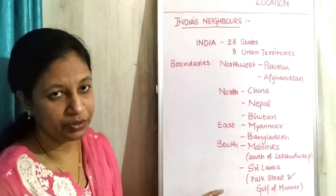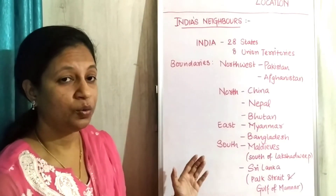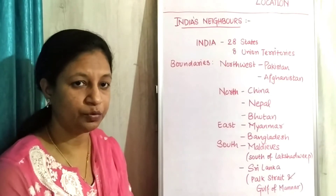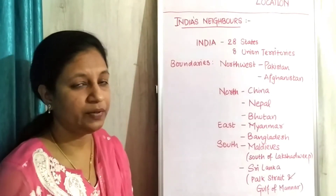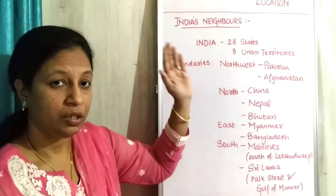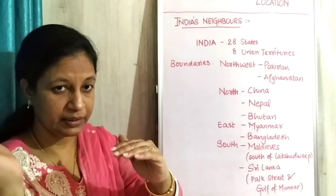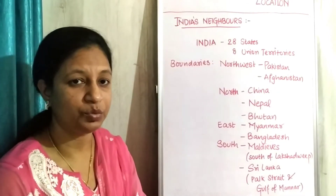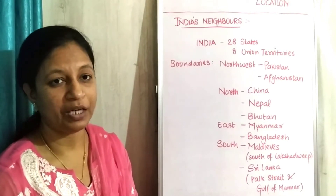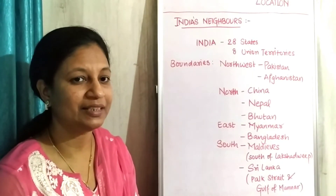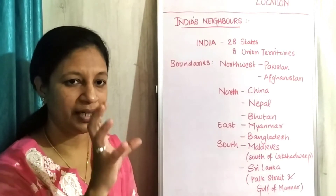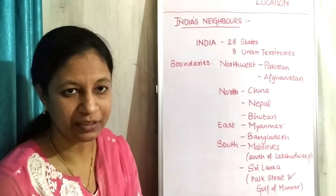So these are the countries which are the neighbours of our country — all of these need to be included. We go from north-west, then north, then east, and then come to the south side. This brings us to the end of the introductory part of geography — a quick summary of how and where our country is situated.